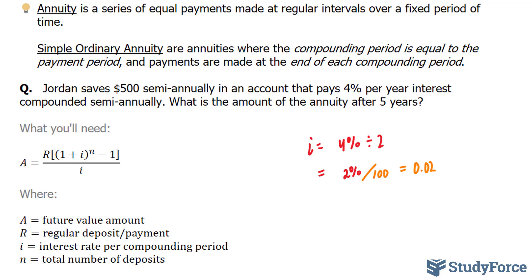Now your R value represents the regular deposits or regular payments. So we're assuming what Jordan is doing is he's putting $500 into his account every 6 months. So therefore, our R value is equal to $500.